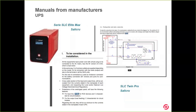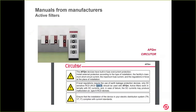Continuing with the same manual in the warnings section, again it says we need to use an RCD type B. Let's follow with more examples. Manuals from Sally Crew, a UPS manufacturer, for two different models — SLC LED Max and SLC Twin Pro — both manuals state the UPS should be protected with type B RCDs. Next: active filters from Circutor. As manufacturers of the solution, we know it must be protected with RCD type B, and it's included in the manual. For EV charge, depending on the power, type A or type B solutions should be used.